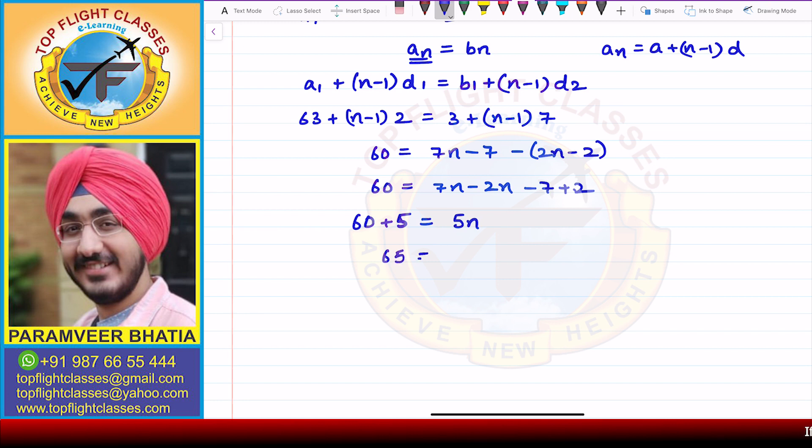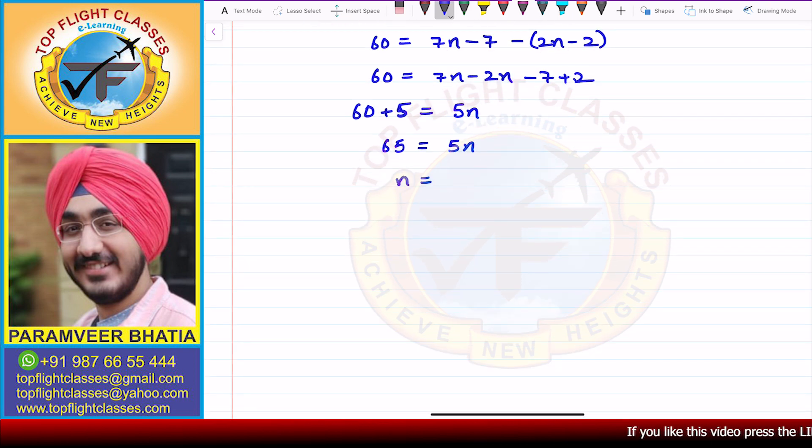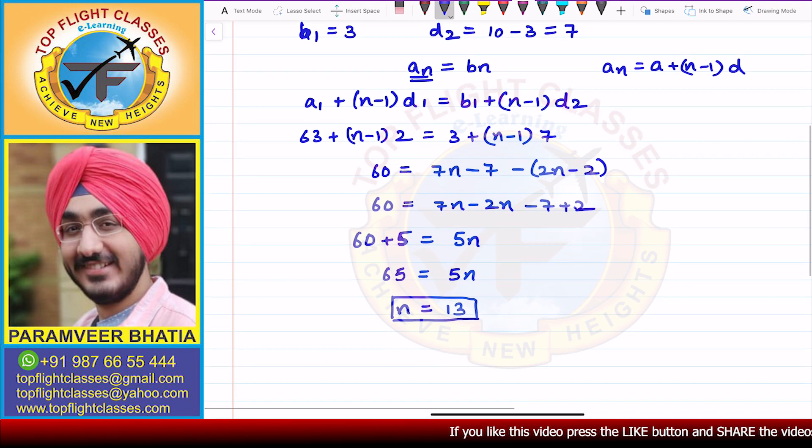So 60 plus 5 is equal to 5n. So here we have 65 is equal to 5n, so n value comes out to be 13. So the 13th term is equal for both APs.